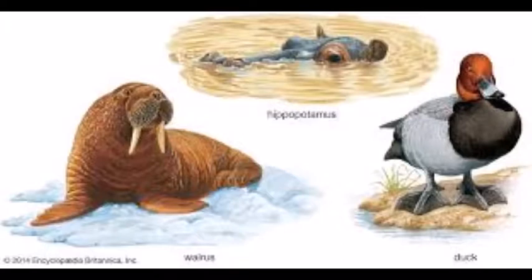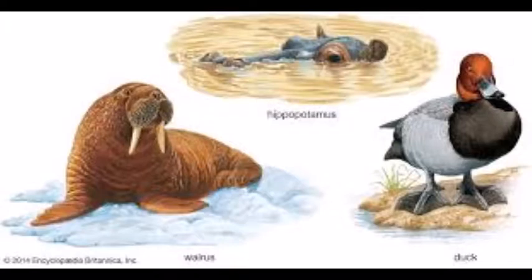Now for practice questions. Cacti have modified leaves and spines — the reduction in size decreases the number of pores through which water can be lost to the air. That is anatomical — correct. The rat-tailed maggot, which lives in water with low oxygen concentration, has a long breathing tube that extends from its body to just above the water surface, allowing it to take oxygen from the air. Atmospheric air contains more oxygen than water. That is also anatomical. Kidneys of some desert mammals have a modified long loop of Henle to reduce water loss by producing very concentrated urine — also anatomical. All three items in the first column were anatomical.